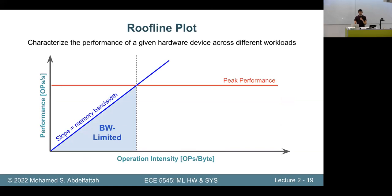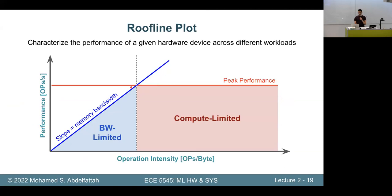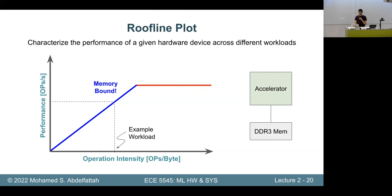The slope of the slanted part equals memory bandwidth — equivalent to 20 GB/s in this example — while the flat line equals peak performance. If the workload hits the slanted part, it's memory bound. If anyone wants to guess how to speed up a memory-bound application — get better memory, make the workload less memory-intensive, or use faster memory — those are the right directions. This is one of the most important concepts in this lecture.